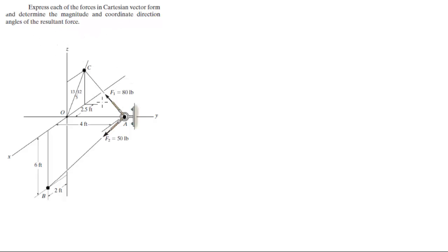Here's how we're going to do it: we're going to find the position vectors for points A, B, and C. Then we're going to find the position vectors from A to C and from A to B by subtracting — A minus C for A to C, and B minus A for A to B. When we have those direction angles, we multiply the cosine of them by each of the forces to get the Cartesian vector form of the two forces.